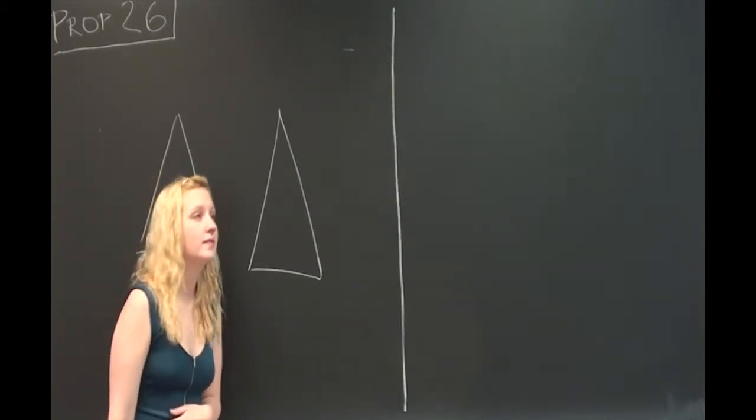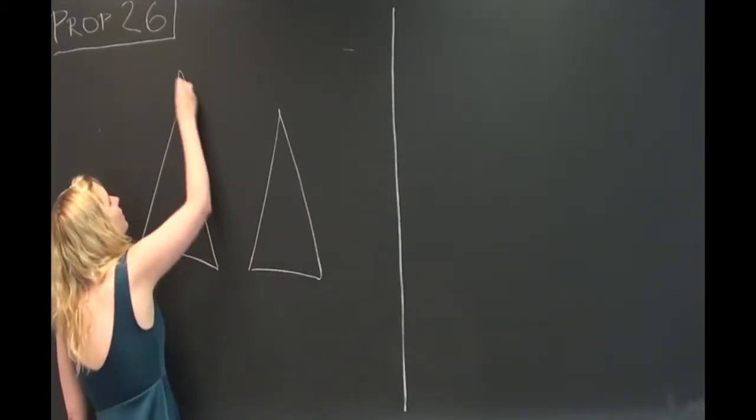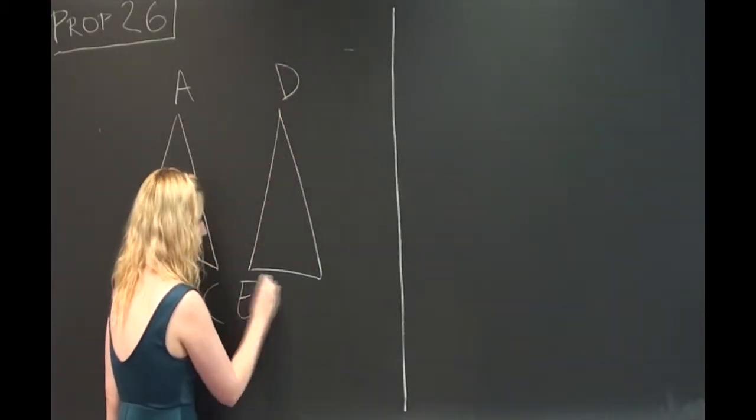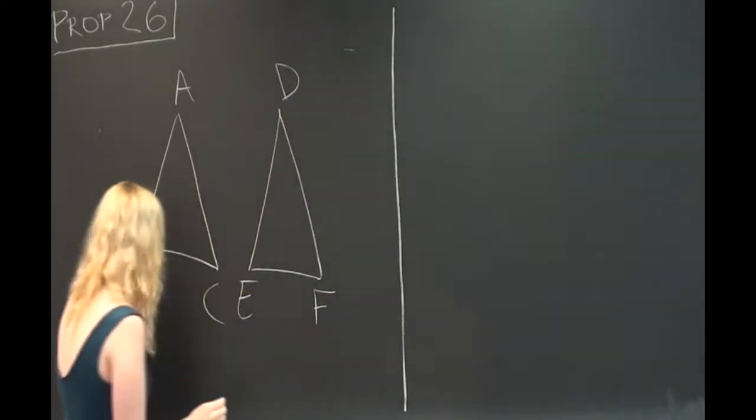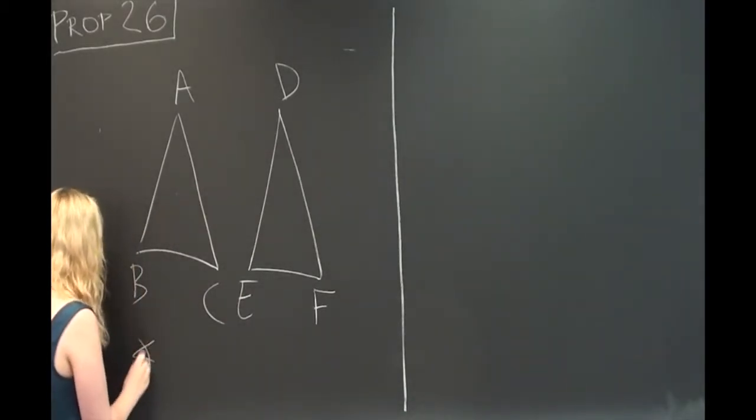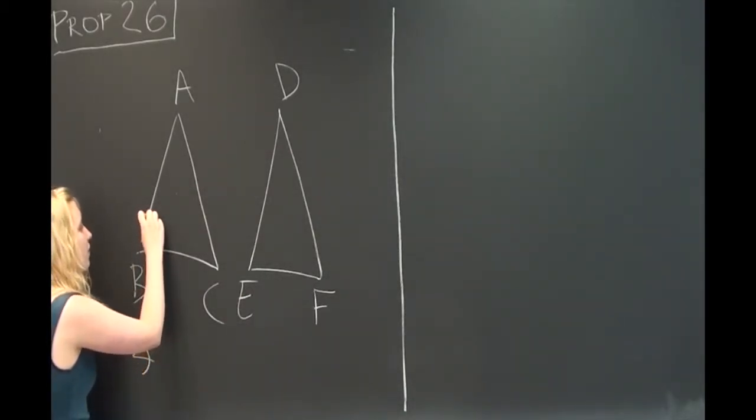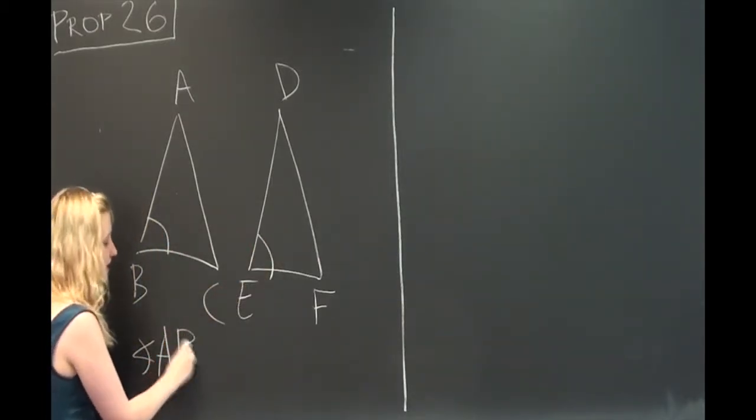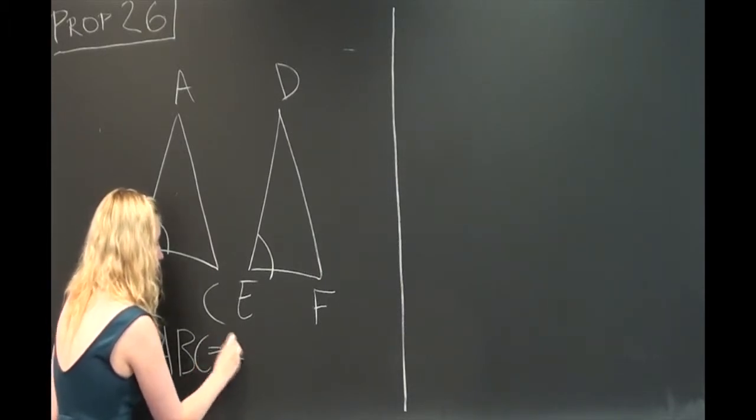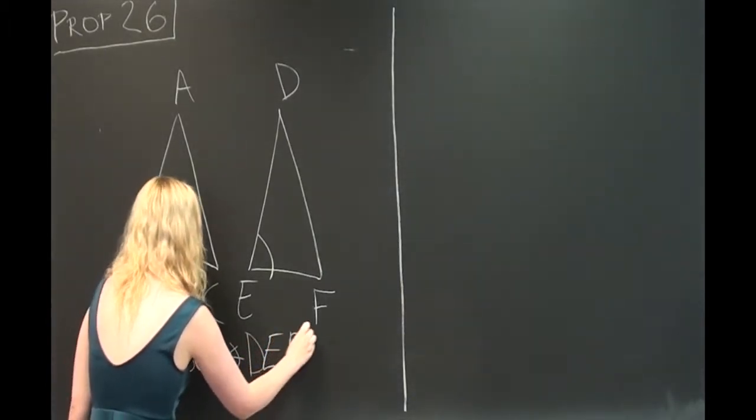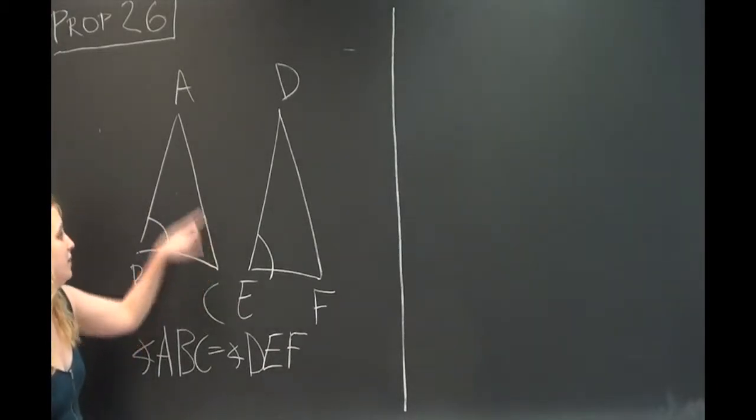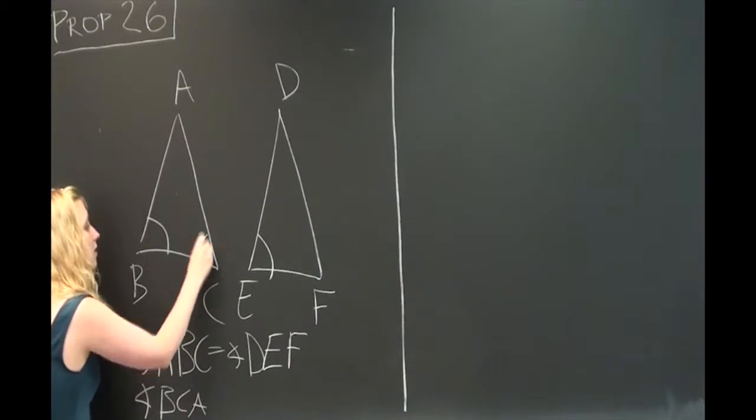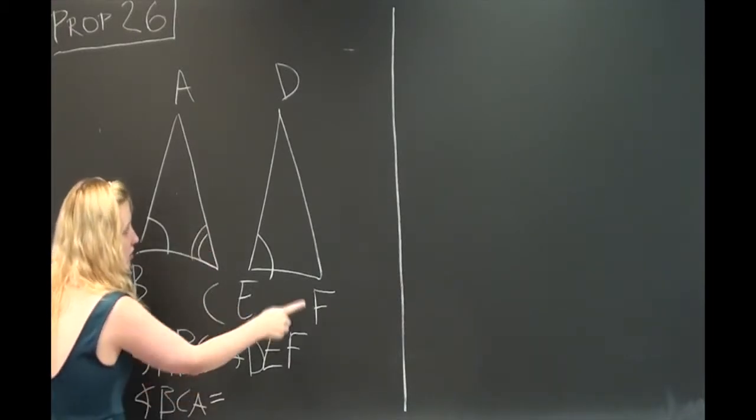So we'll start with triangles ABC and triangles DEF. We're going to say that angle ABC equals angle DEF. We're going to say that angle BCA equals angle EFD.